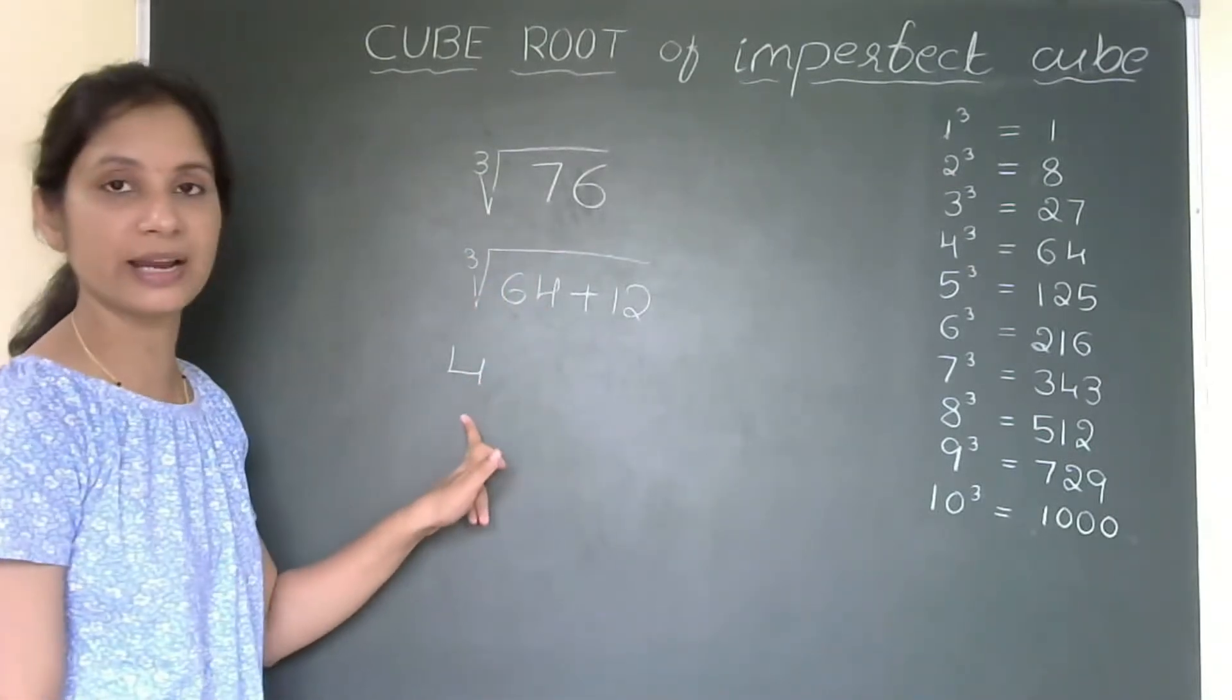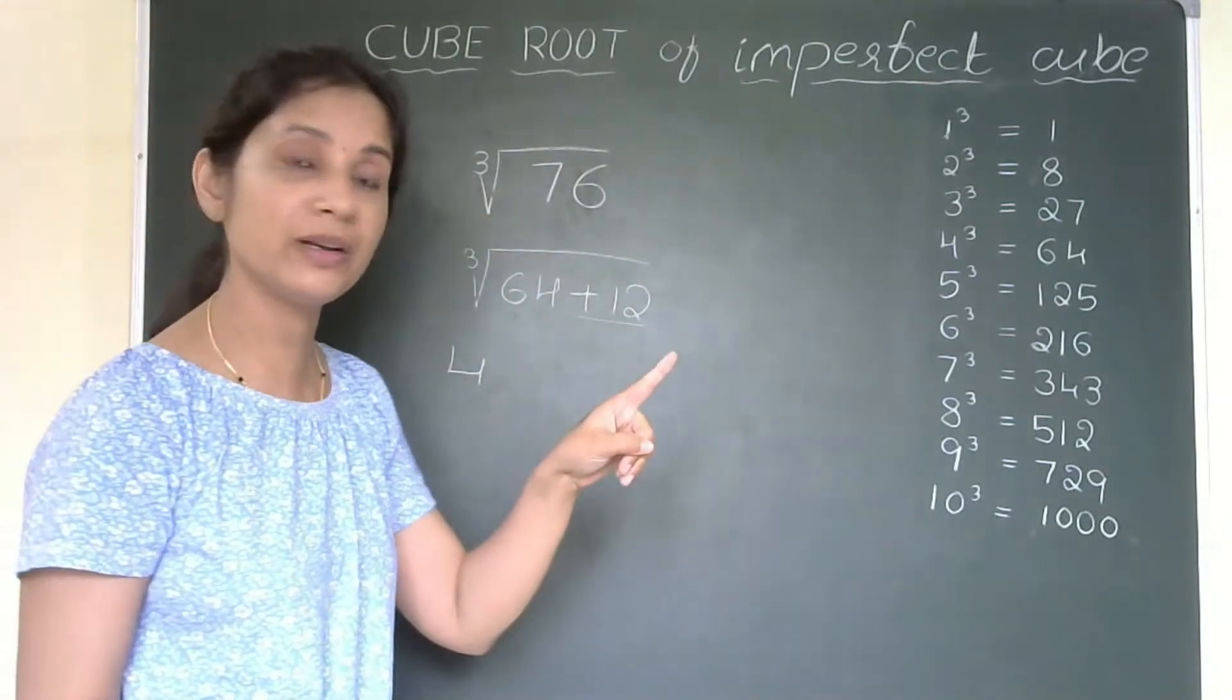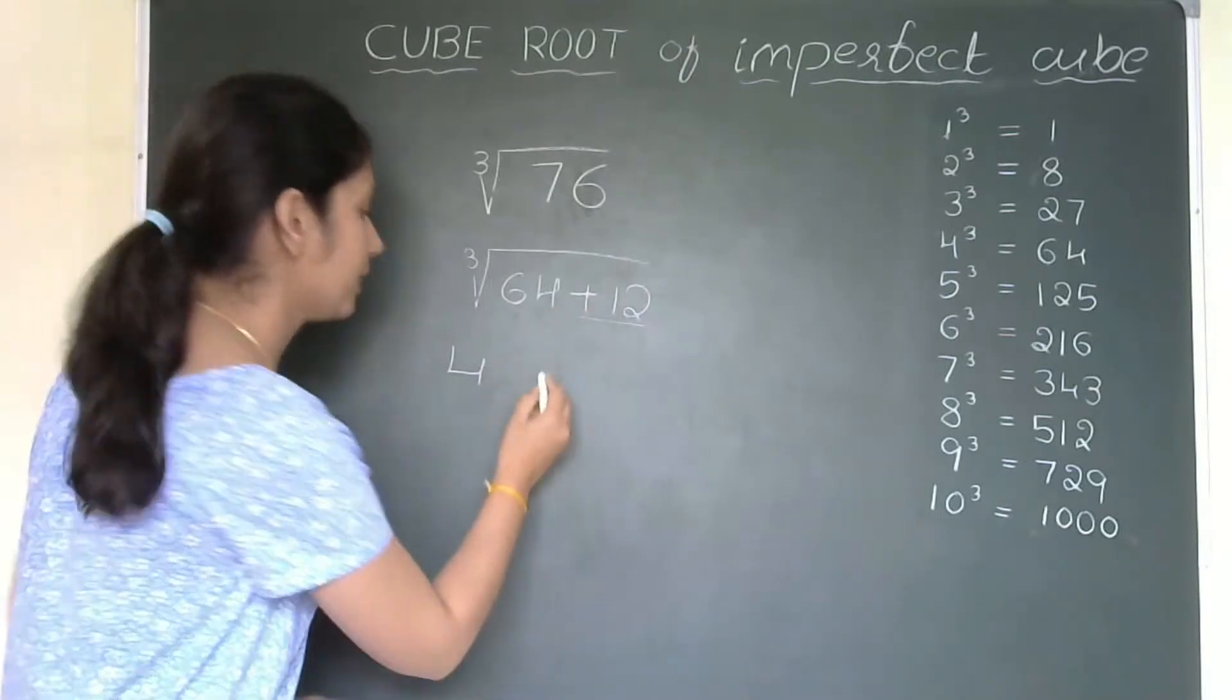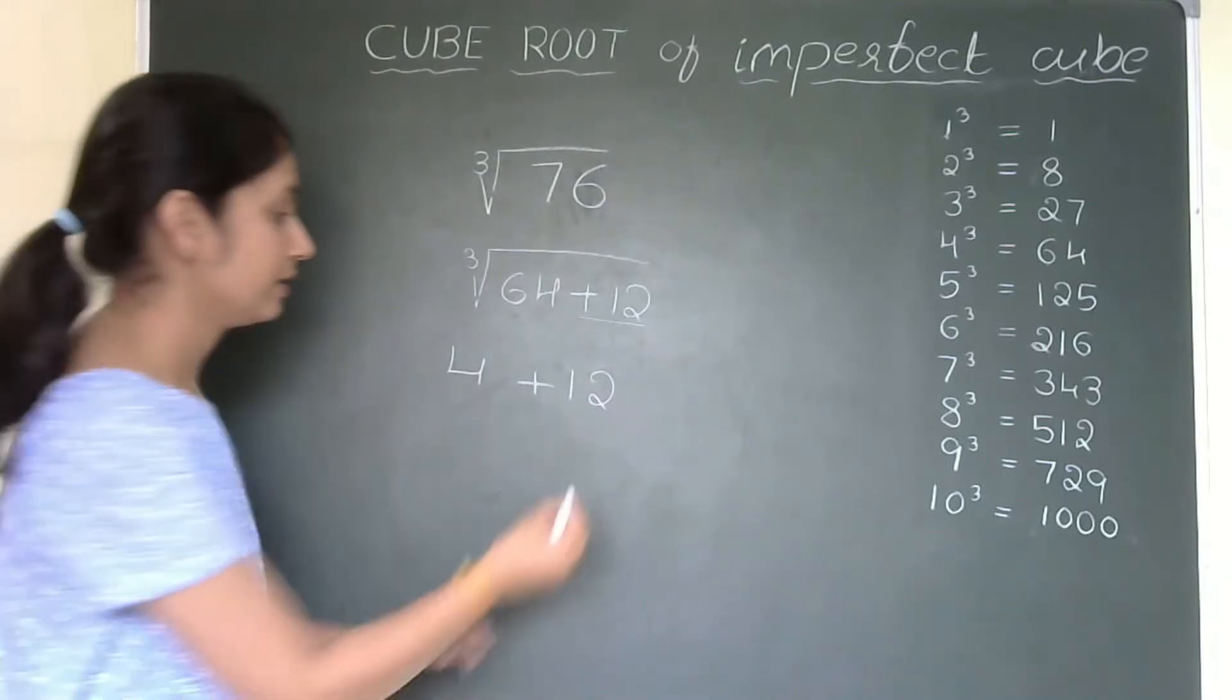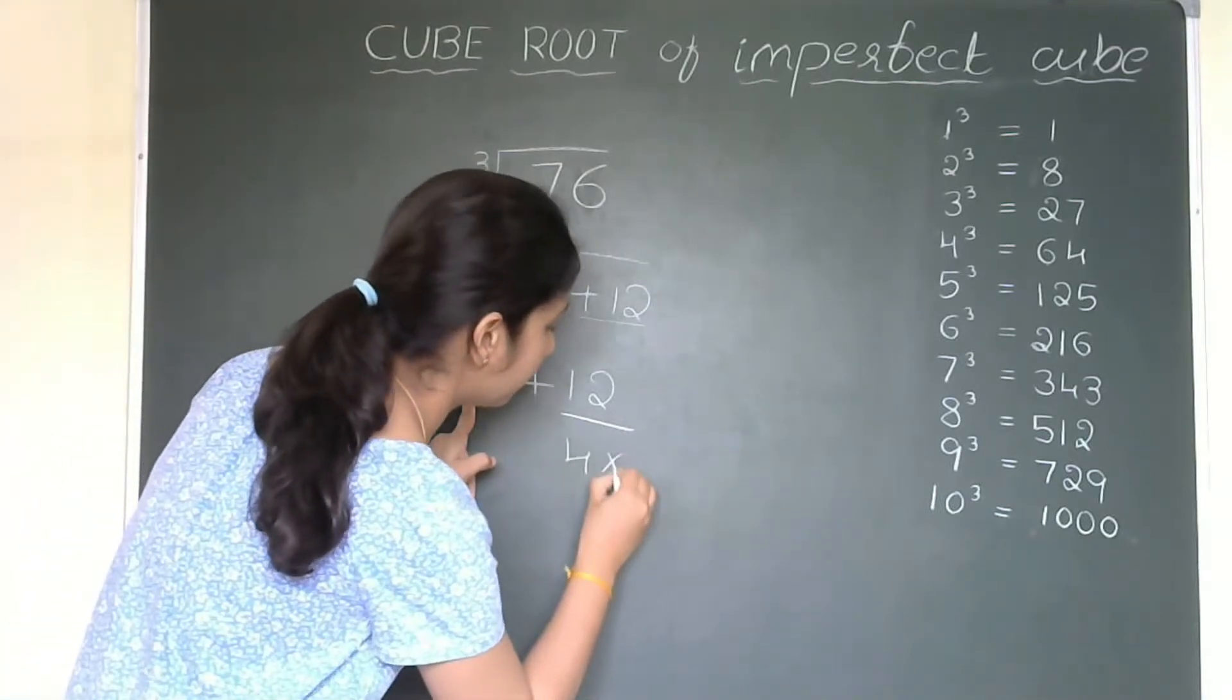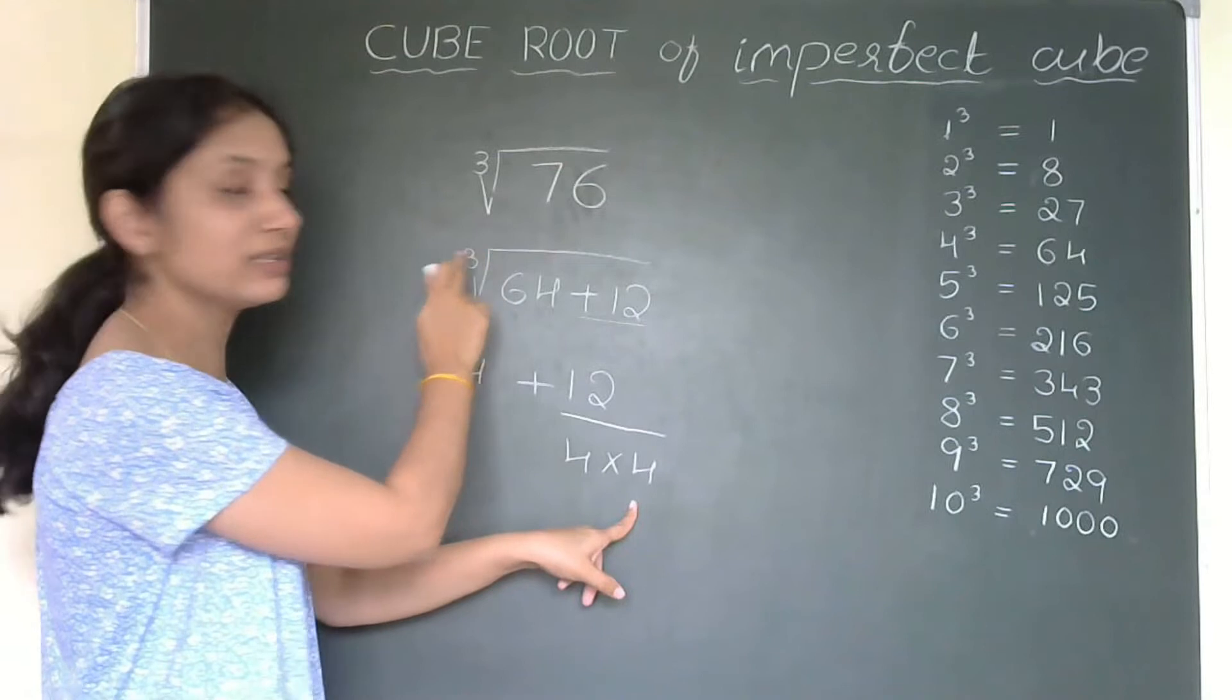We know that 4 we will write and then write as it is plus 12 here. If you consider 125, what will happen? You will write 125 minus something to get 76, right? Here, I am getting plus 12. That plus 12, I will directly write like this and then 12 divided by, this 4 multiplied by 4. That means you are taking the square of this number.